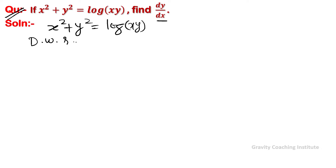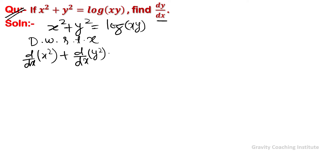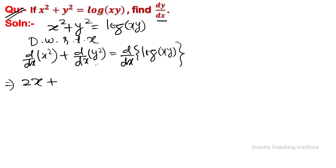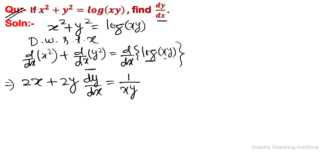Differentiation of x square plus differentiation of y square equal to differentiation of log xy. So differentiation of x square gives 2x, and by implicit differentiation we get 2y dy/dx equal to, and using log differentiation, 1 upon xy, then we differentiate xy.